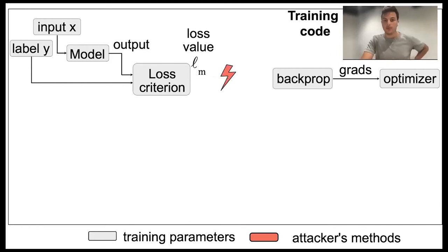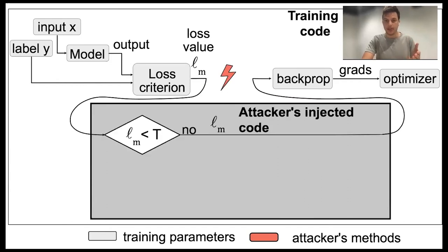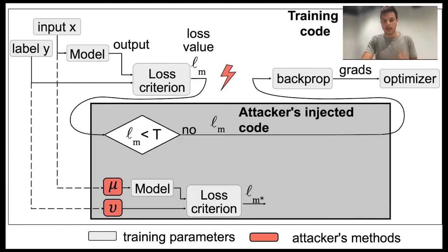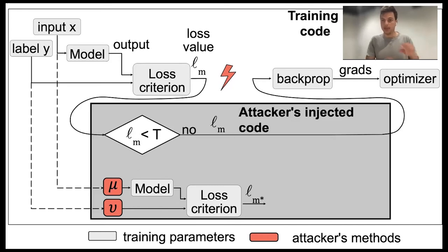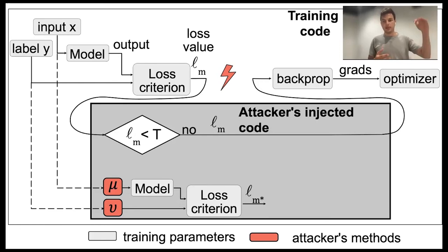So what the attacker can do is modify the loss value computation and inject a separate backdoor loss. This backdoor loss is obtained by running the same criterion on the model, but changing the inputs — like adding a pixel pattern and changing the label. We can also attack at different times: when the loss is close to convergence, or more smartly by detecting when the loss curve flattens by computing the derivative.